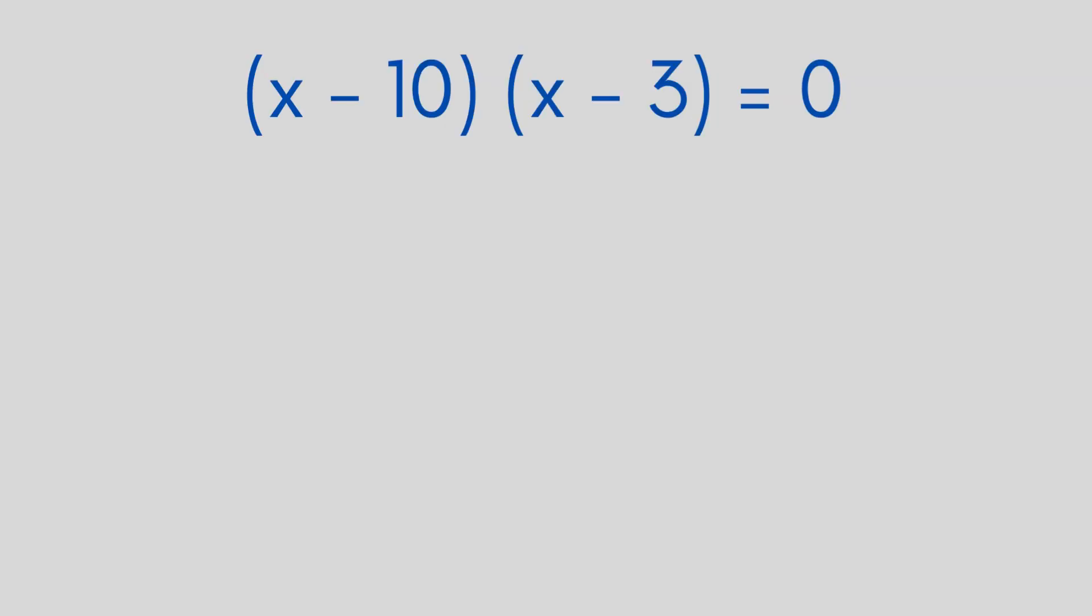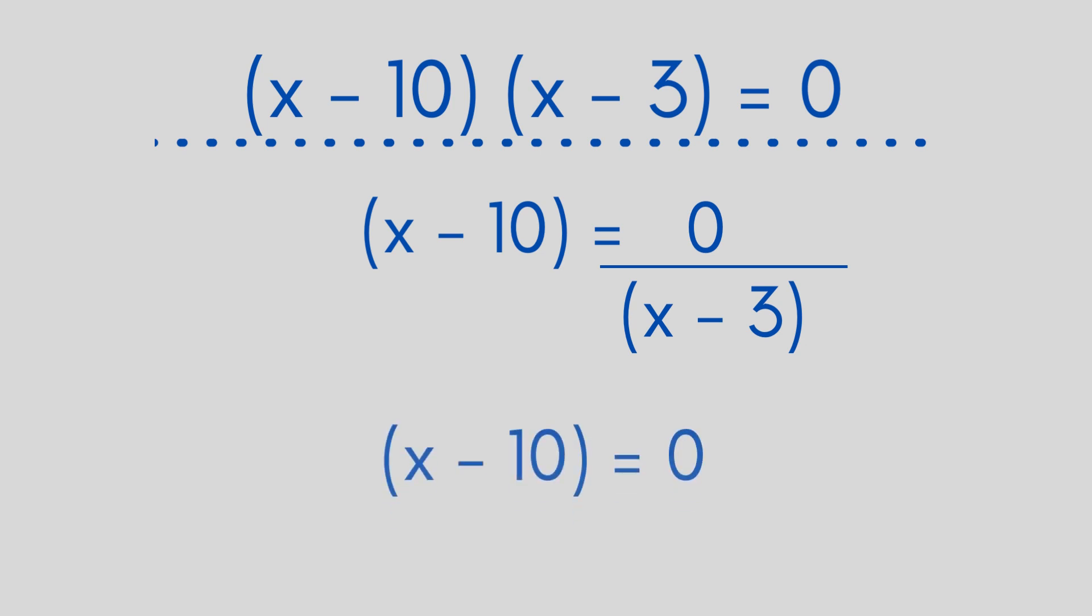Now when (x - 3) is taken to the right hand side, it becomes a denominator to 0 and 0 divided by (x - 3) is equal to 0. So we will be left with x - 10 = 0 and when this minus 10 is taken to the right hand side, we will get plus 10. That is, we will get x = 10.